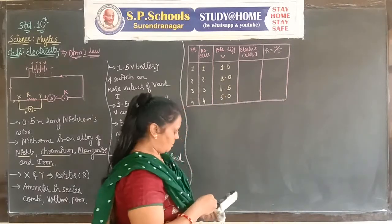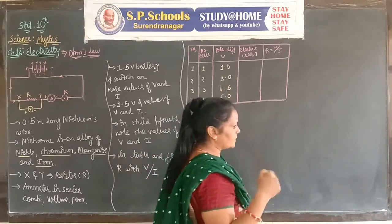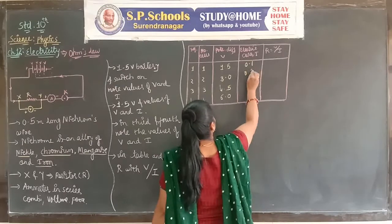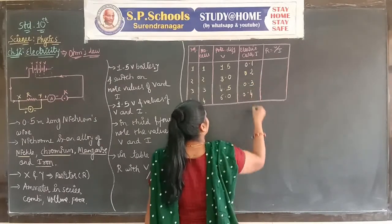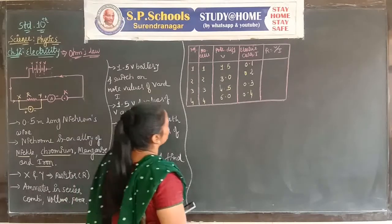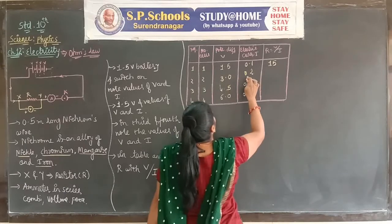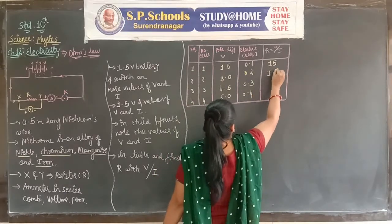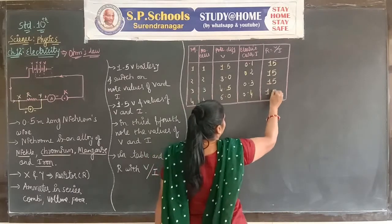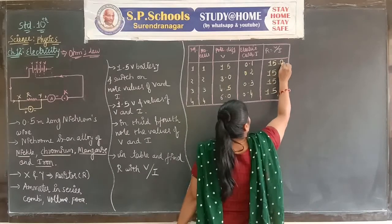When we find V divided by I: 1.5 / 0.1 = 15, 3.0 / 0.2 = 15, 4.5 / 0.3 = 15, and 6.0 / 0.4 = 15. One important thing to note is that R is constant. The symbol of resistance is Ω, called omega.